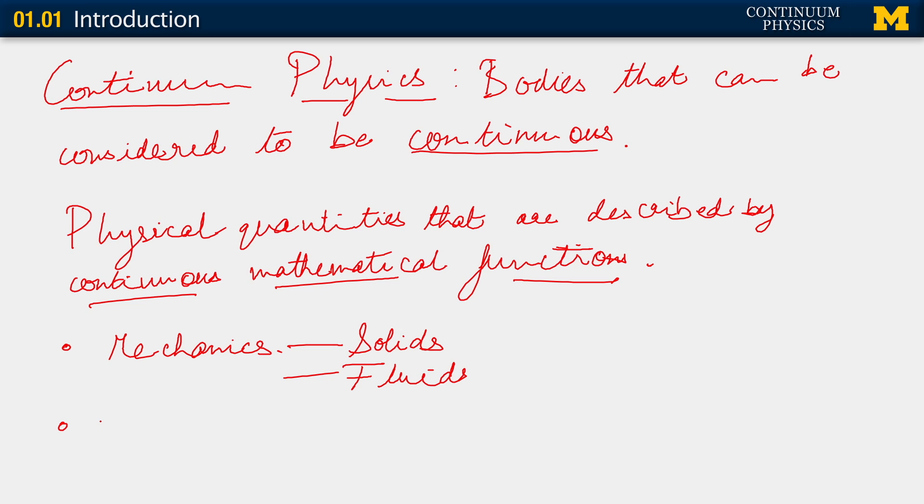The other broad phenomenon that we're going to consider, towards the latter section of this series of lectures, is transport. When I say transport, we're going to look at how quantities — maybe mass, maybe heat — are transported through the bodies of interest. We'd be interested in how some field of interest, like a chemical field, is going to be transported through this body. Same thing with this bottle of colored water: we may introduce at one end a dye of some other color — maybe red — and watch how that dye is transported through the rest of the fluid. That's what we mean by transport.